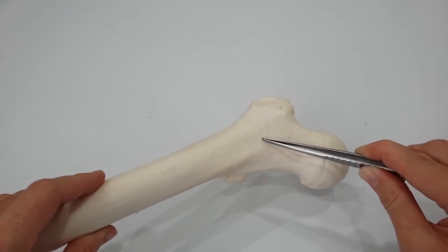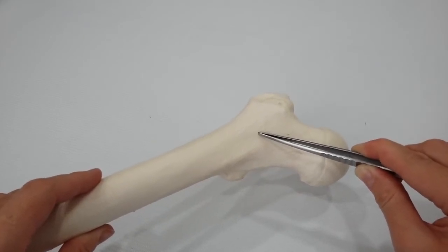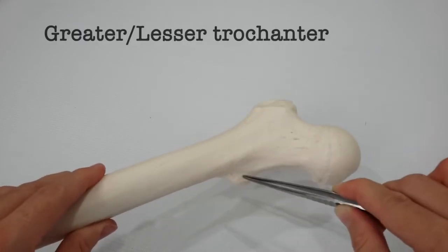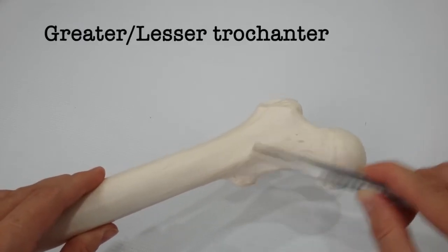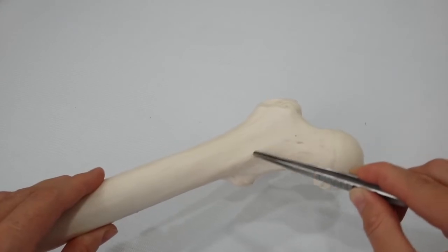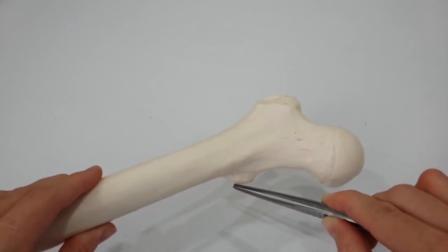The size of this angle can be altered by disease. The greater and lesser trochanters are large eminences situated at the junction of the neck and the shaft.